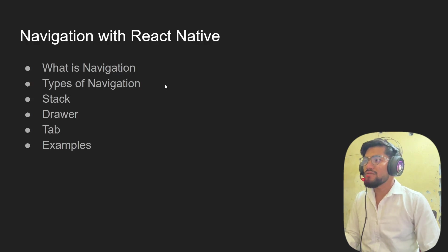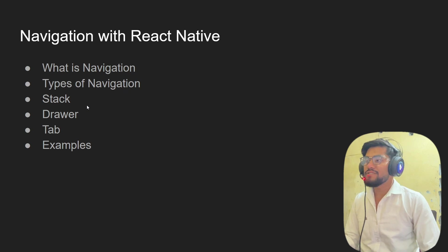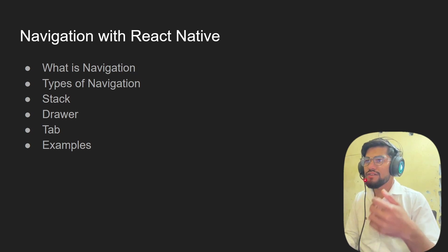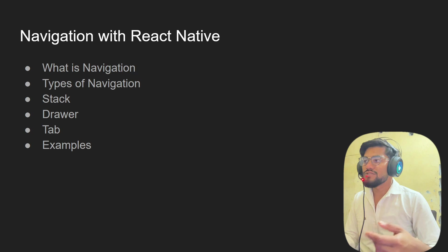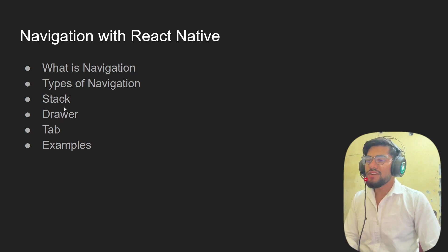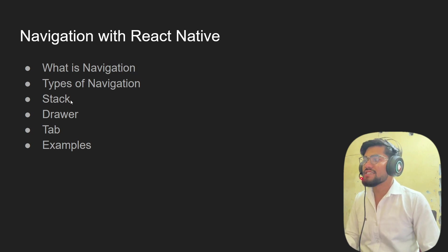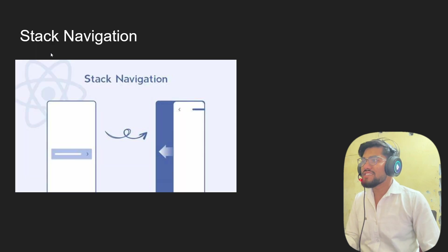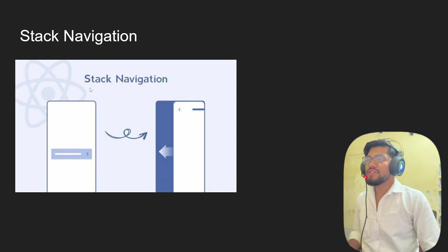Let's talk about the types of navigation. We have stack navigator, drawer navigator, and tab navigator. Stack navigator means basically when we click on any button it goes to the next screen or next page. So the types of navigation are stack navigator, drawer navigator, and tab navigator.